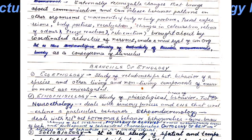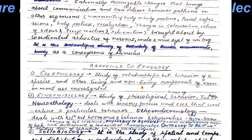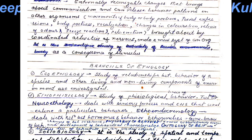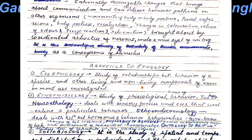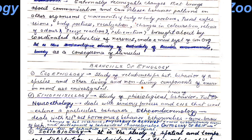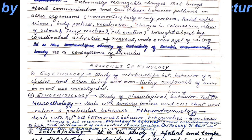There are various basic branches on which ethology is based. The first is ecoethology, which is the relationship between the behavior of a species and other living and non-living components of the ecosystem.